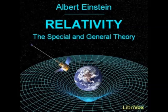Section 24: Euclidean and Non-Euclidean Continuum. The surface of a marble table is spread out in front of me. I can get from any one point on this table to any other point by passing continuously from one point to a neighboring one and repeating this process a large number of times, or, in other words, by going from point to point without executing jumps. We express this property of the surface by describing the latter as a continuum.